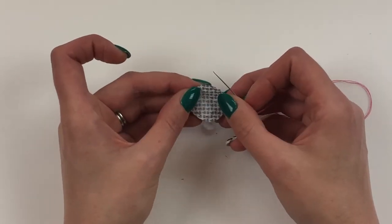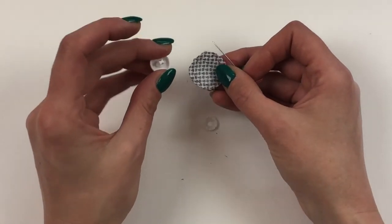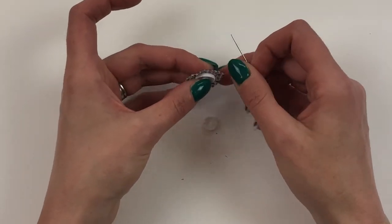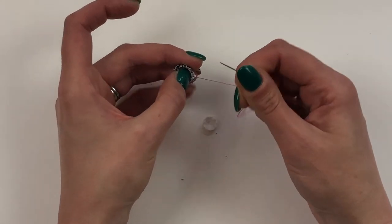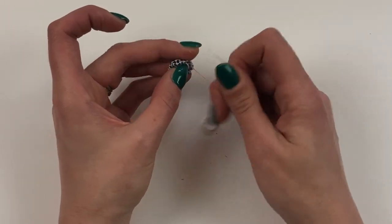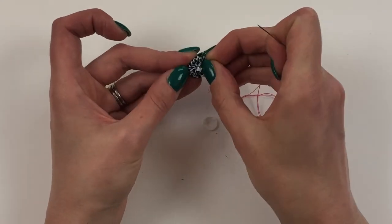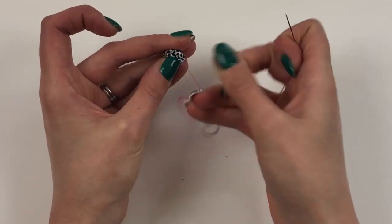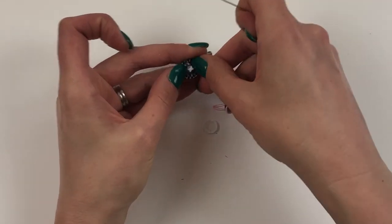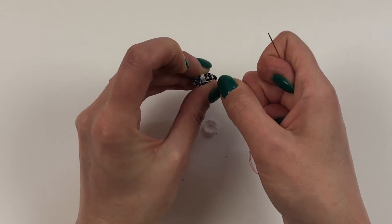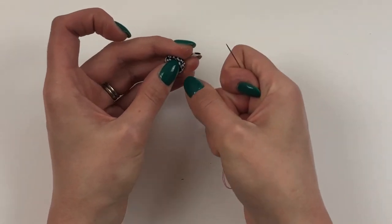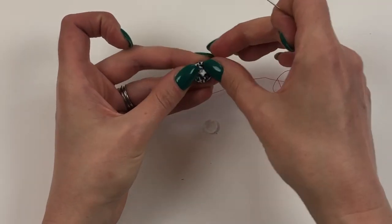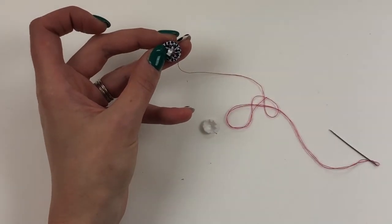And then once you get round to the beginning take your button and place it in the middle of the fabric and then gather your stitches so that they pull around the outside edge. And this will just bring your fabric over the edge of the button and then just cut your thread.